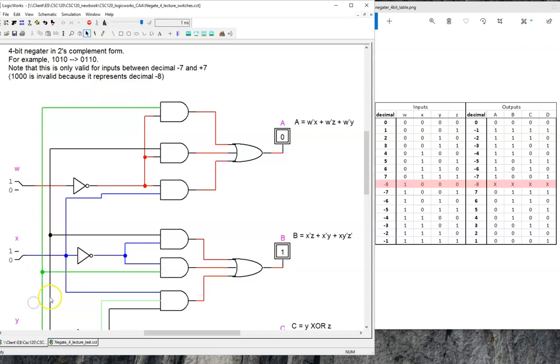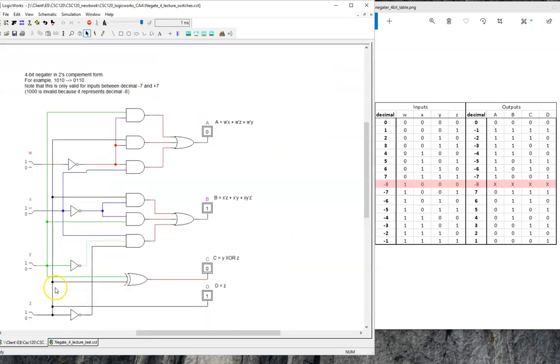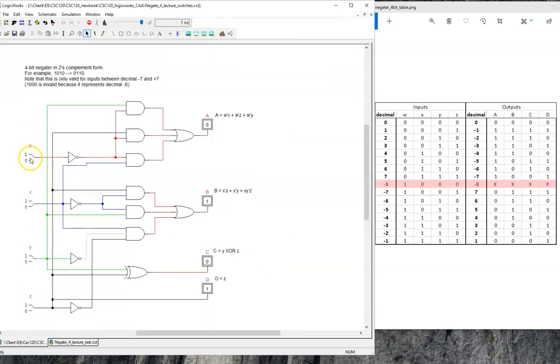But does it work? Let's try out a couple test cases from the truth table. First, let's input positive 5, or 0, 1, 0, 1. The result is 1, 0, 1, 1. Converting that to decimal yields negative 5. So that case works.